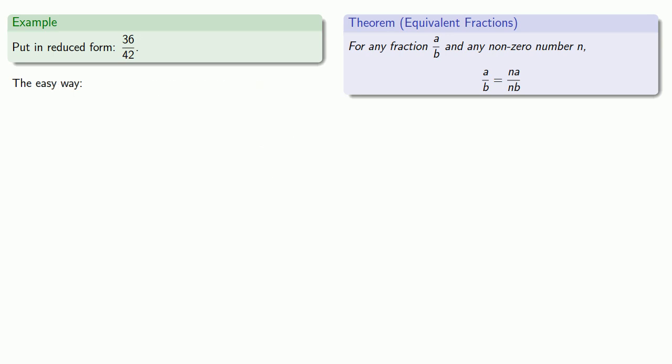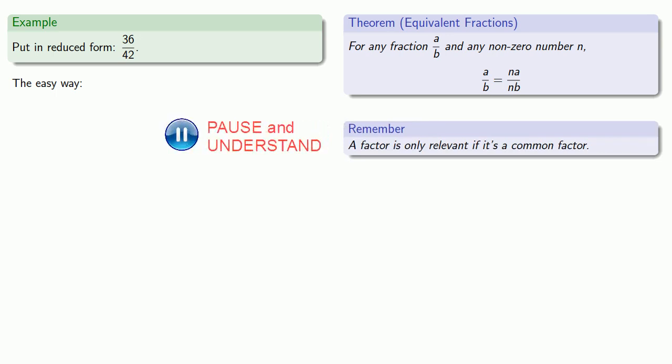What's the easy way? In our equivalent fraction theorem, notice that a factor only matters if it's common to both numerator and denominator. It's got to appear in both, and so this means that a factor is only relevant if it's a common factor. So rather than doing the complete factorization of 36 and 42, we'll just look for factors that are present in both of them. So we stare at our numbers, and the first thing we might notice is that both of these are even, so both have a factor of 2.